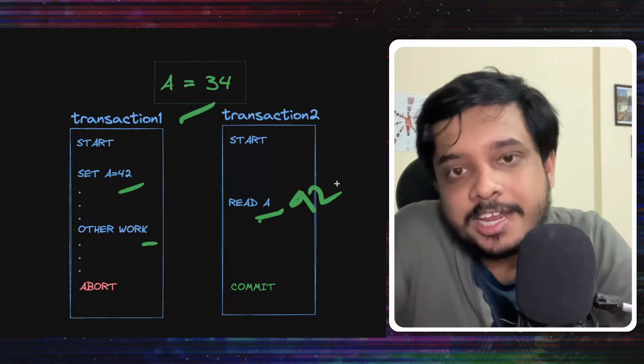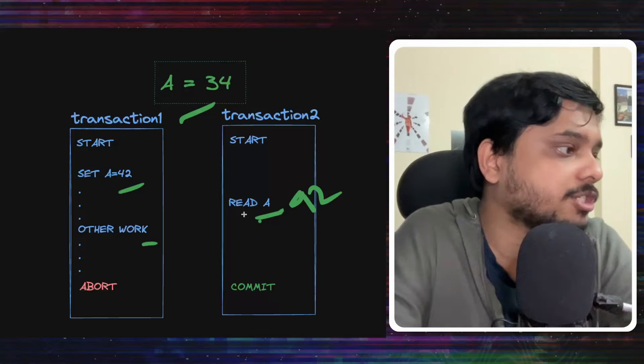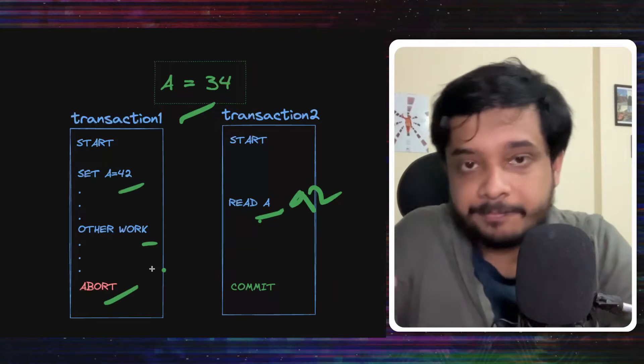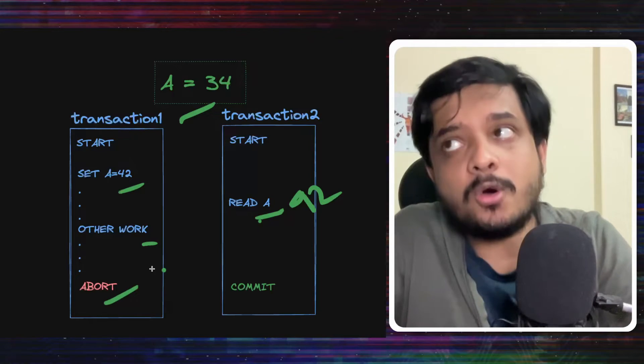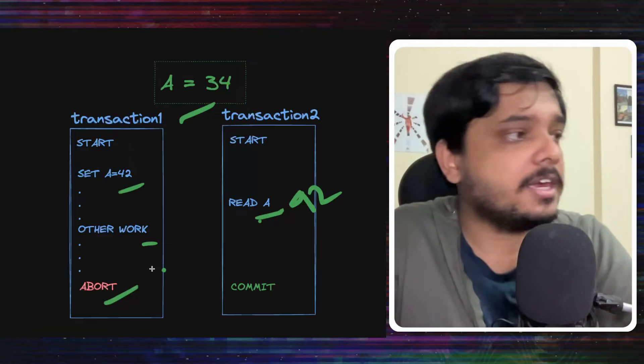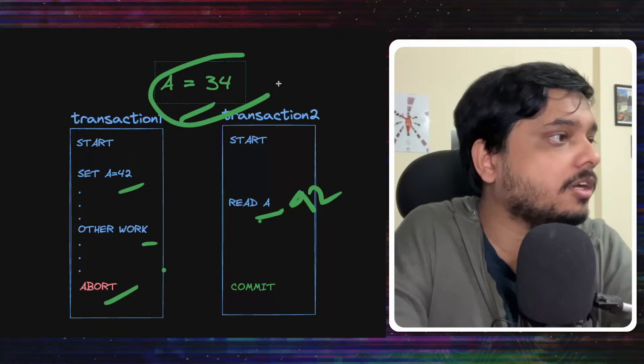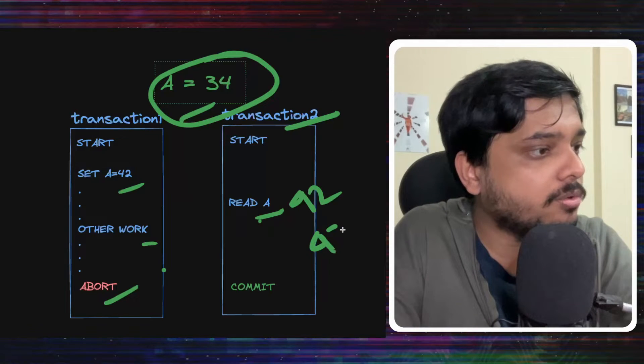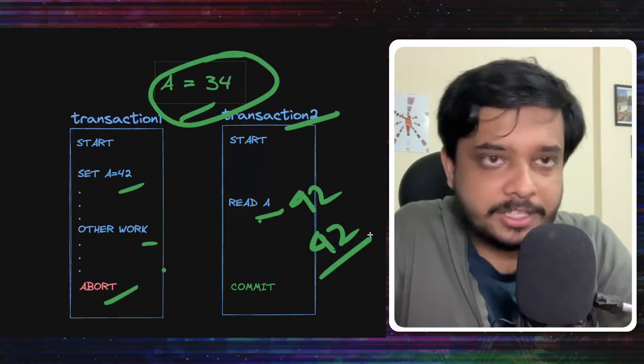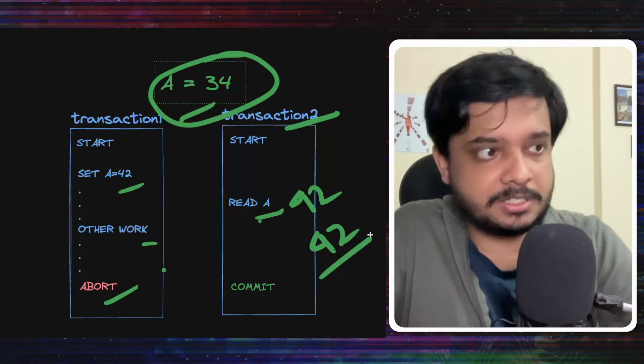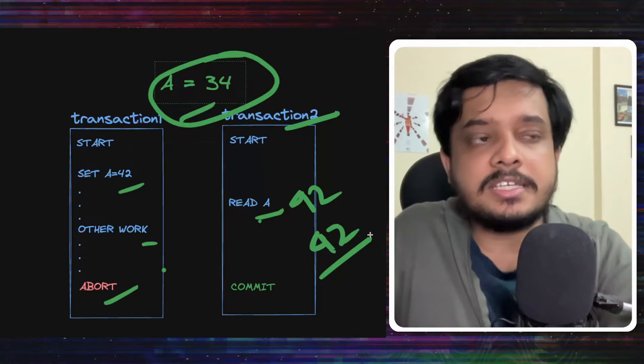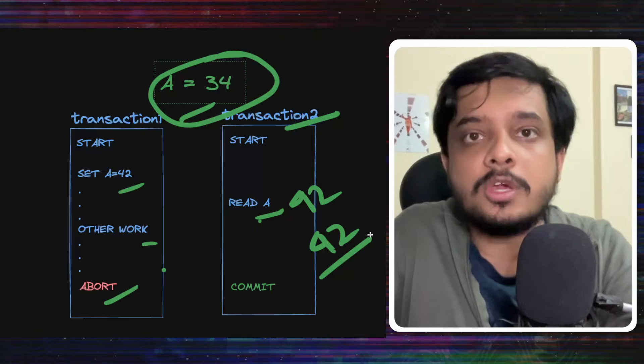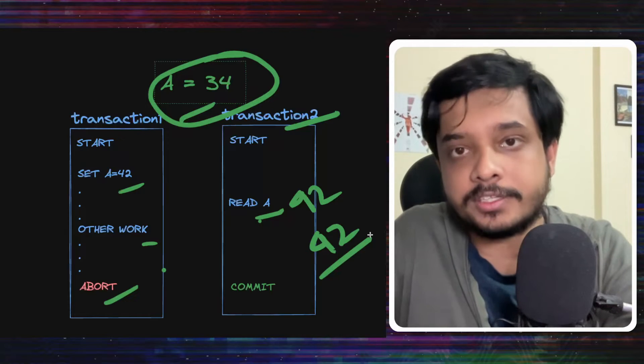Then, like always, things go wrong in software and transaction 1 aborts. Now, the value of A is rolled back to 34 again. But the user of transaction 2 got 42 as result, which is a value that shouldn't even have been read, which is a value we don't want.